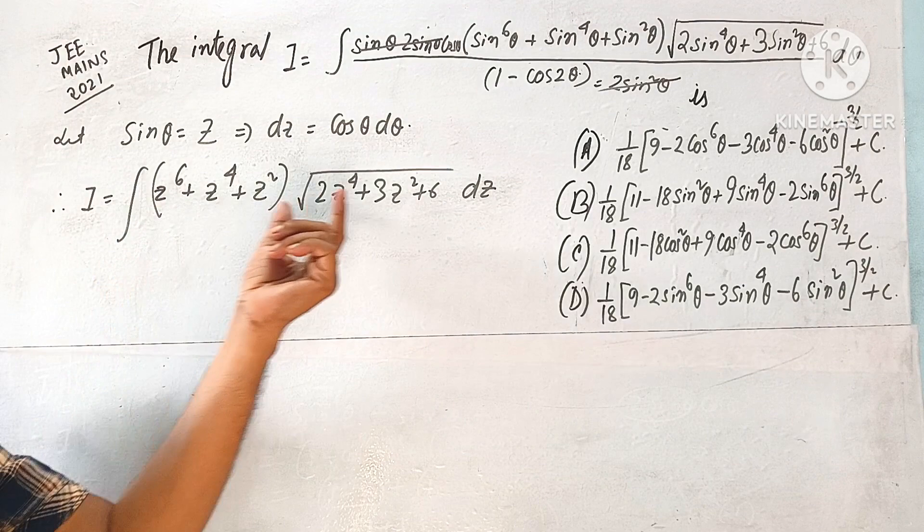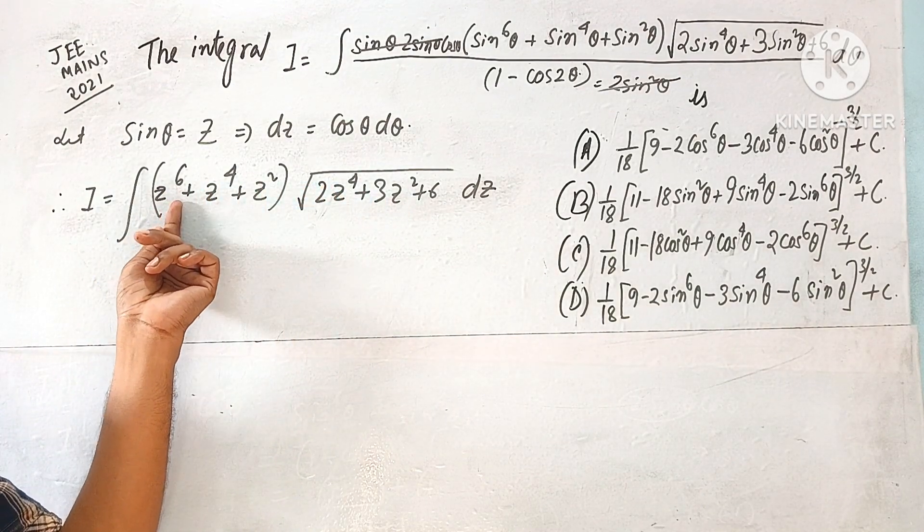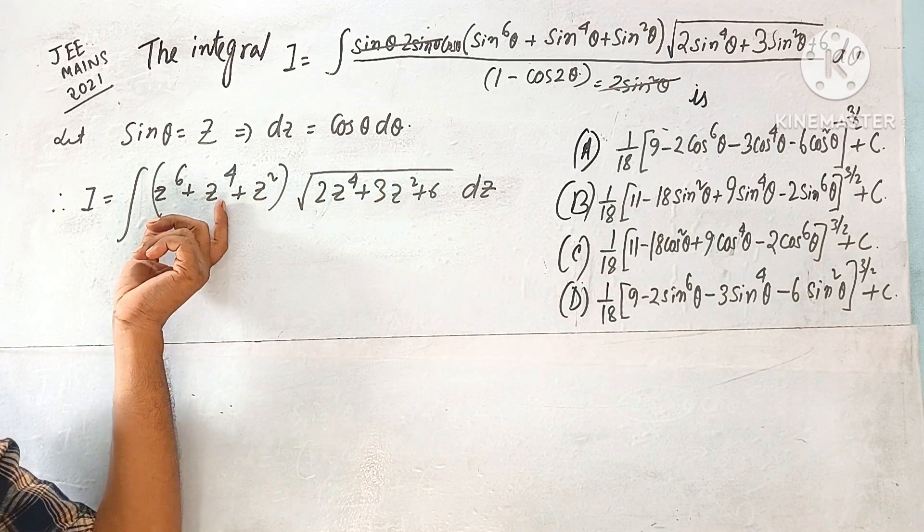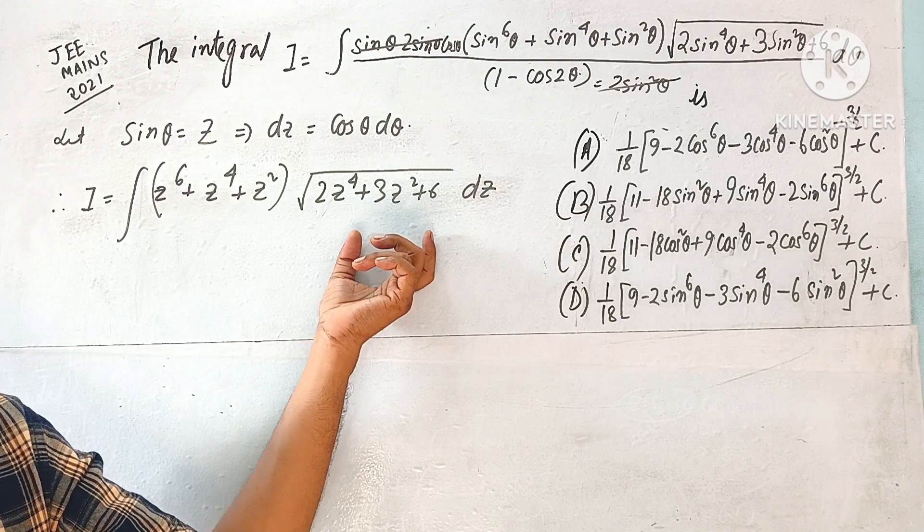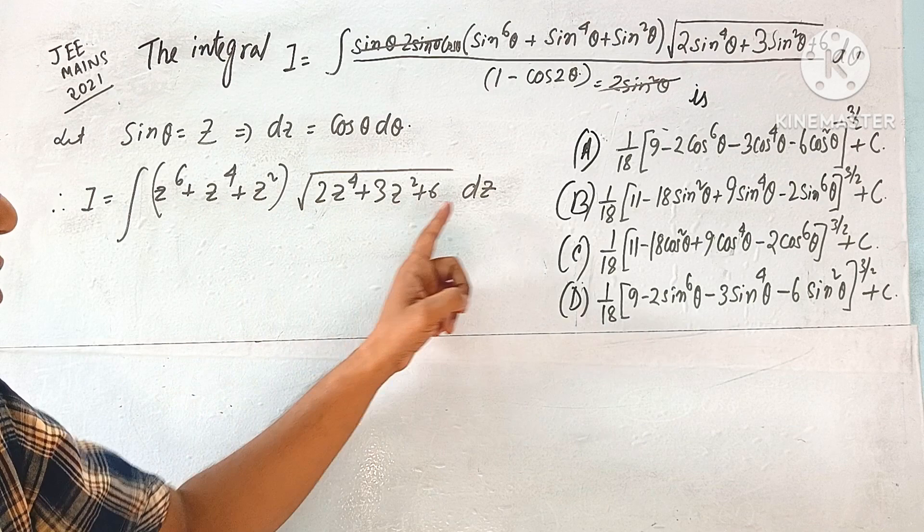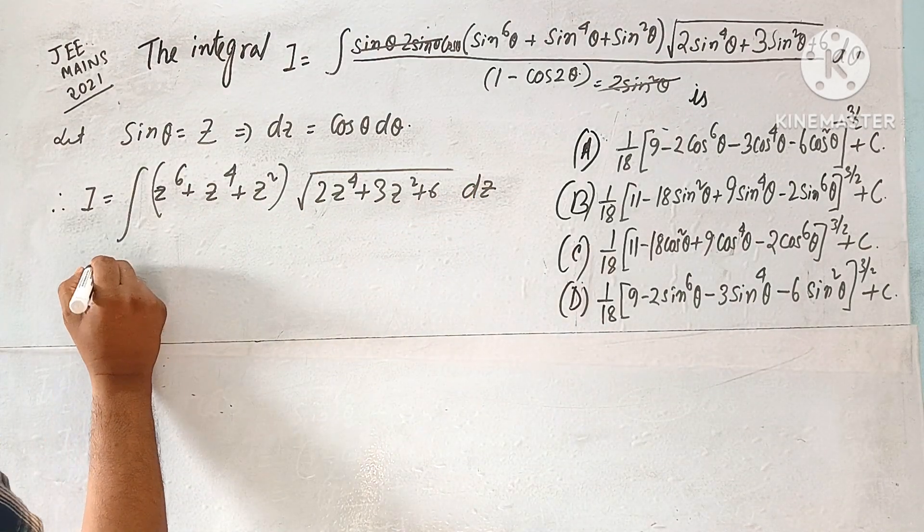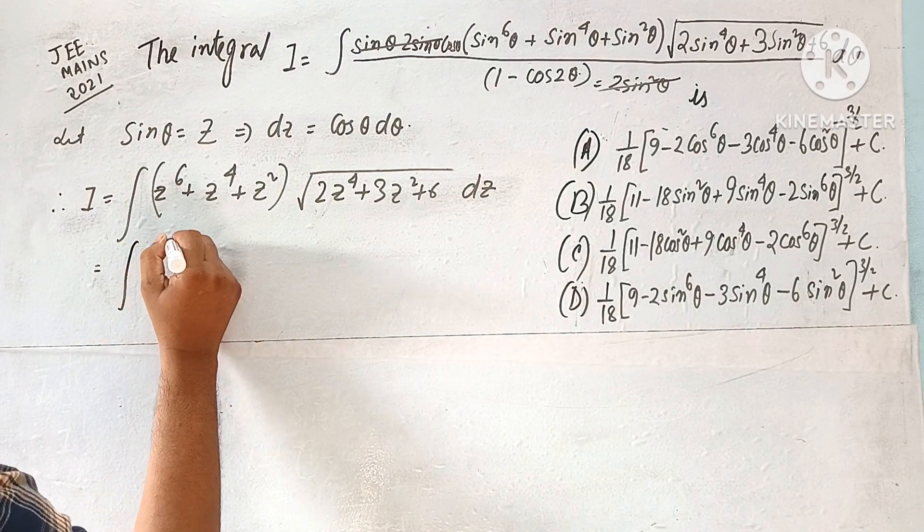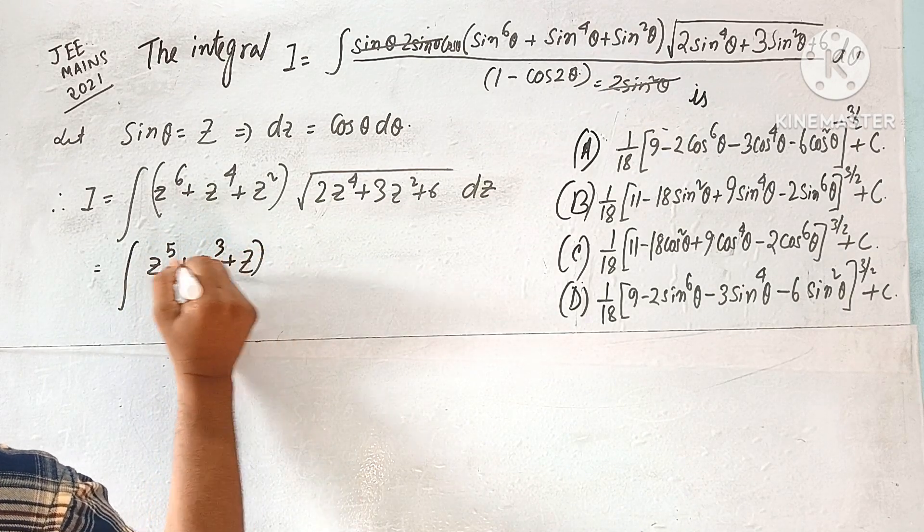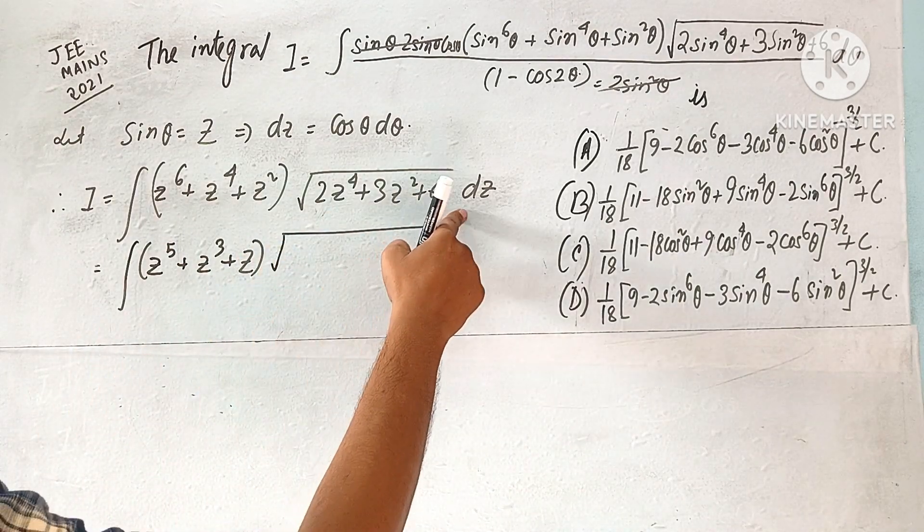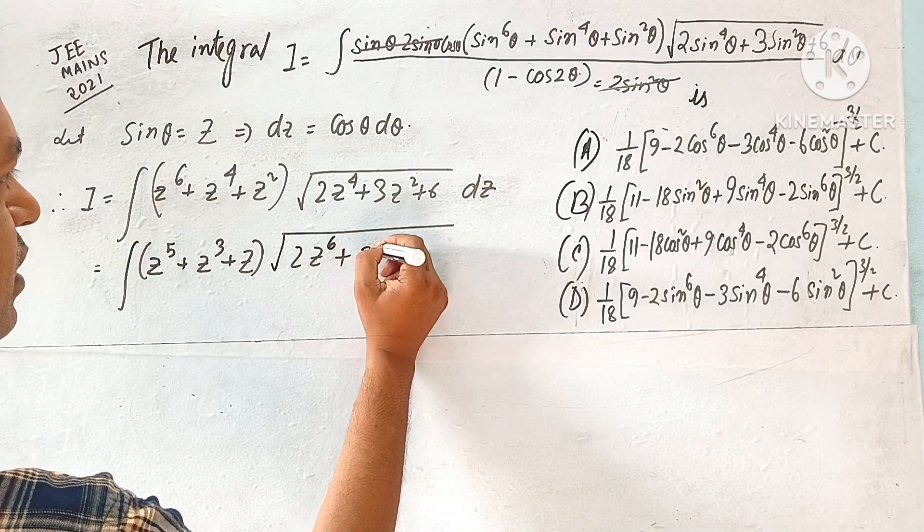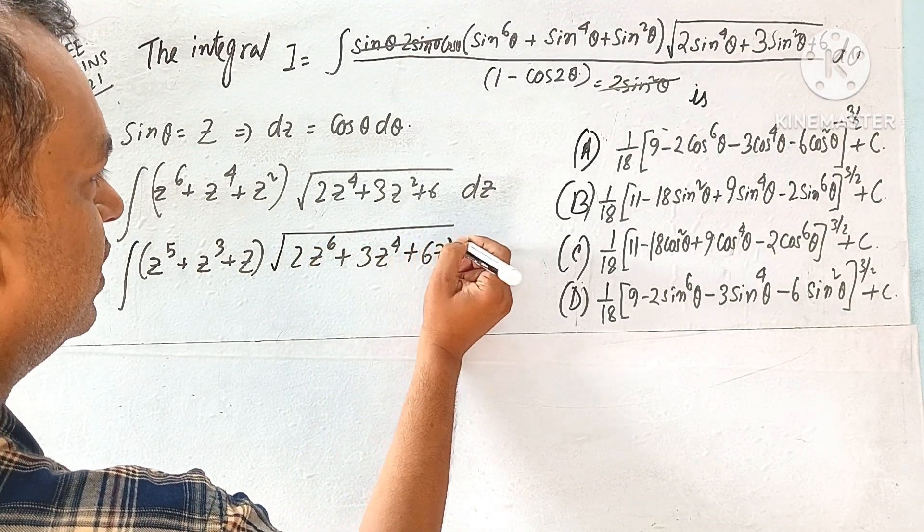Now here is power 6 or 4, here is power 5, here is power 6, here is power 5. So this 5, 6 power differentiate. So what do we have to do here? We have to give z to the power of 5, z to the power of 5, z cube, z. So what do we have to do here? z to the power of 6, 3z to the power of 4, 6z square dz.